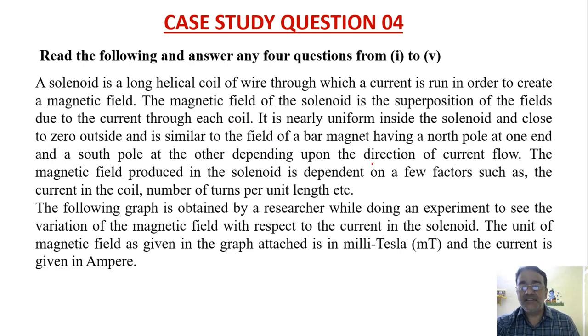It is nearly uniform inside the solenoid and close to zero outside and is similar to field of a bar magnet having a north pole at one end and south pole at the other depending upon the direction of current flow. And the magnetic field produced in the solenoid is depending on a few factors such as current in the coil.